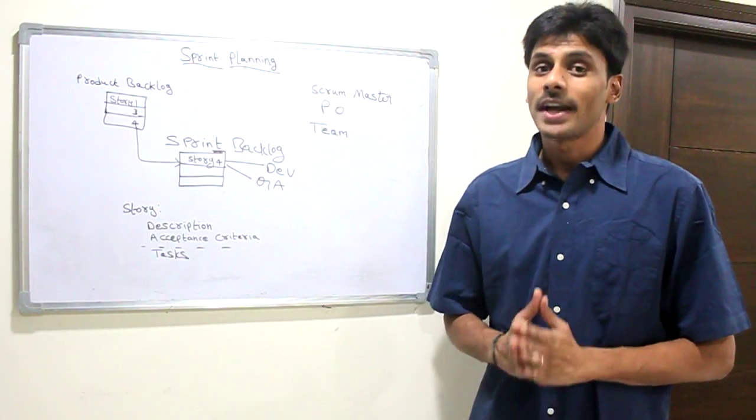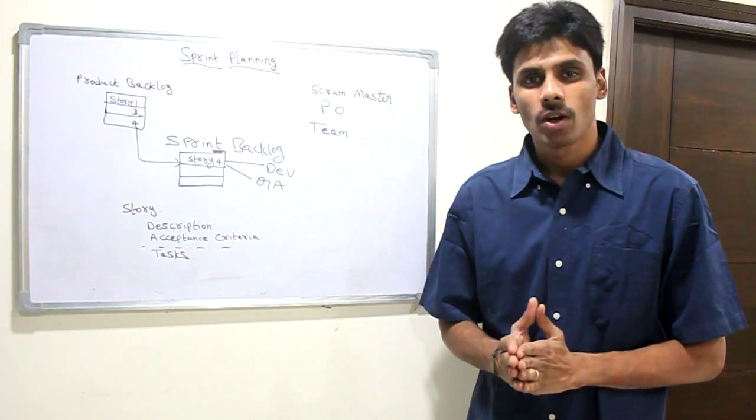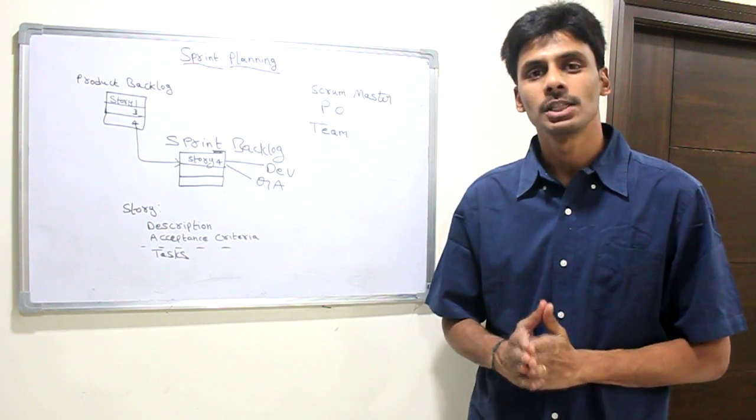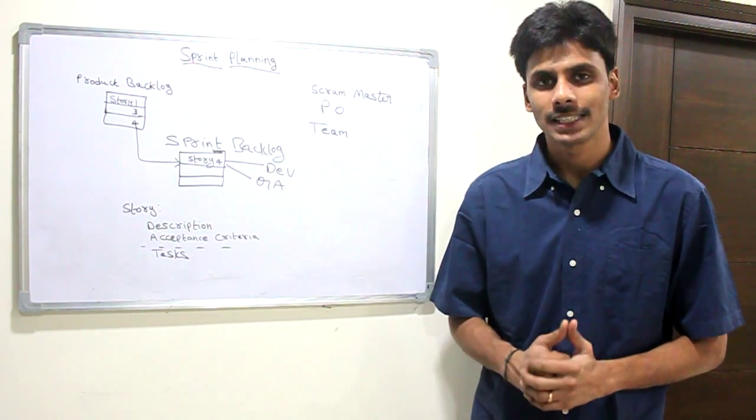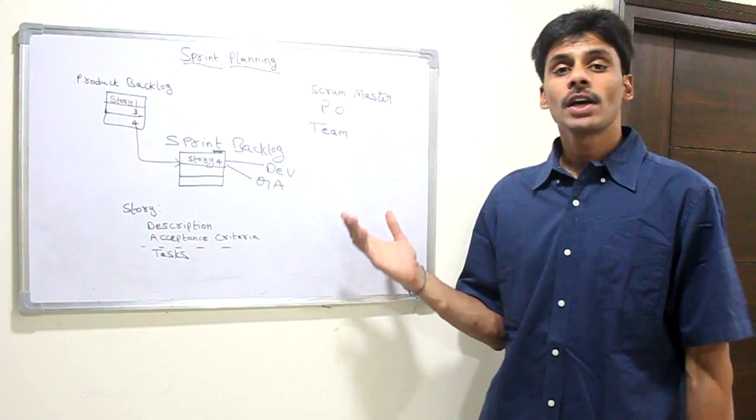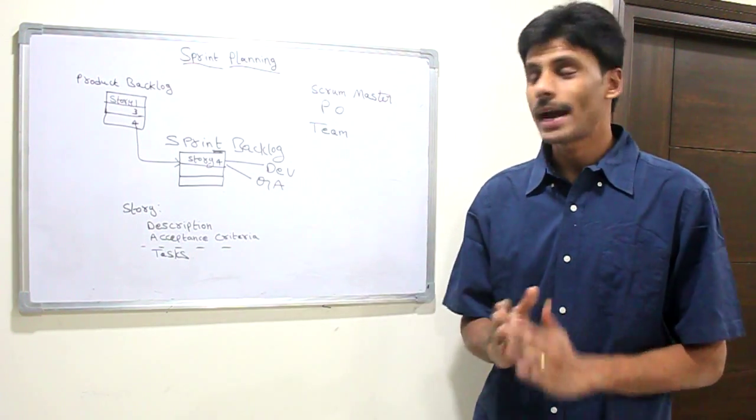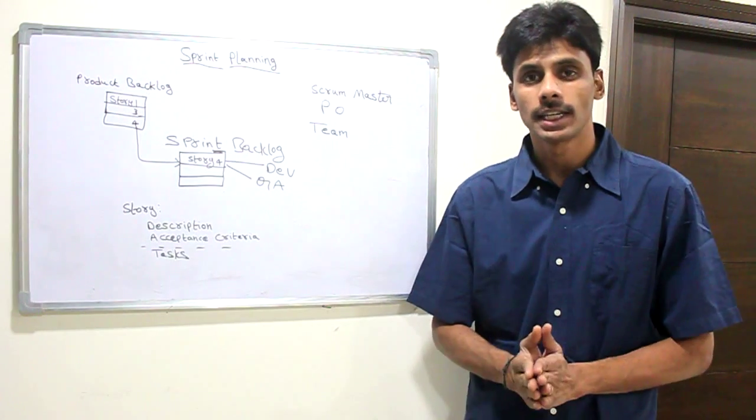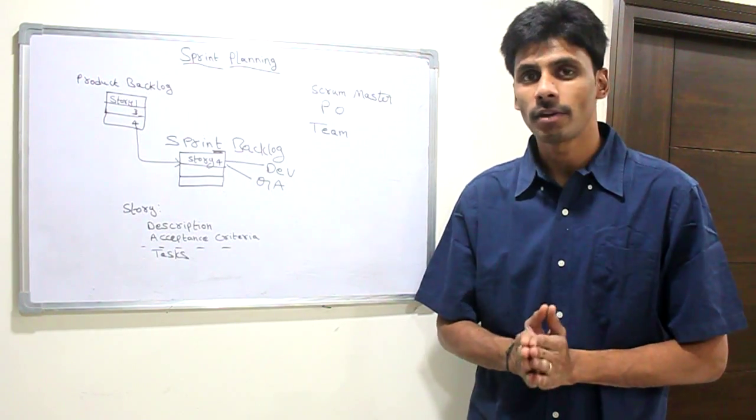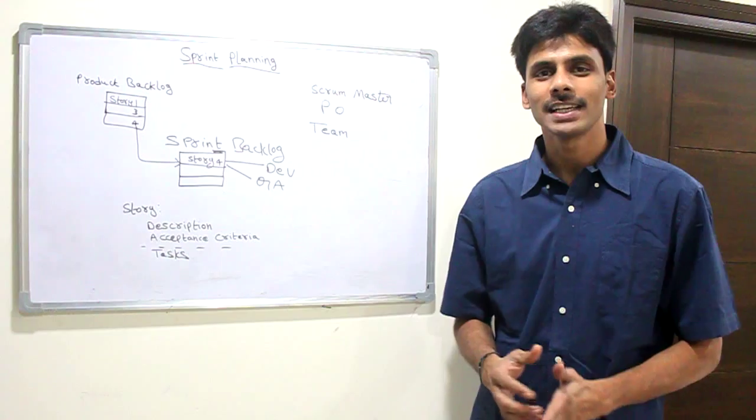Sprint planning happens right at the beginning of each sprint or in between a sprint ending and a new sprint starting. It's usually organized by the scrum master or the product owner, but we always participate as a team and contribute as a team, focusing on team effort.